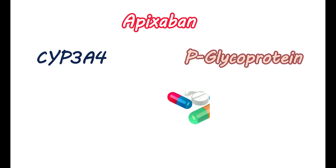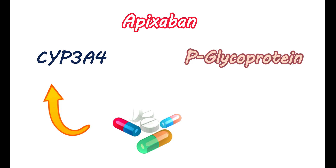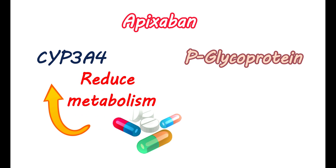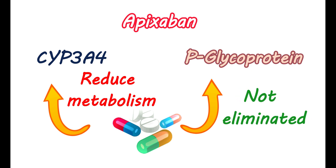Apixaban is metabolized by CYP3A4 enzymes and is also a substrate for P-glycoprotein. P-glycoprotein inhibitors may reduce its clearance and increase its plasma levels, while normally P-glycoprotein increases the excretion of apixaban. Medications that block CYP3A4 enzyme activity can reduce the metabolism of apixaban, increasing its levels and leading to a risk of bleeding. Medications that inhibit P-glycoprotein prevent elimination of apixaban from the body, causing accumulation and toxic effects.